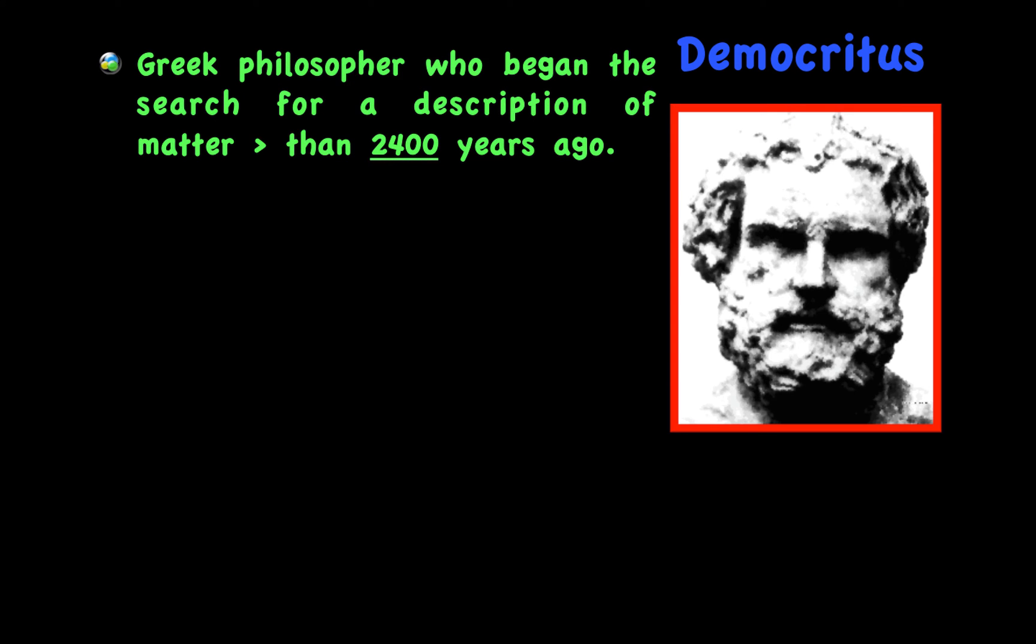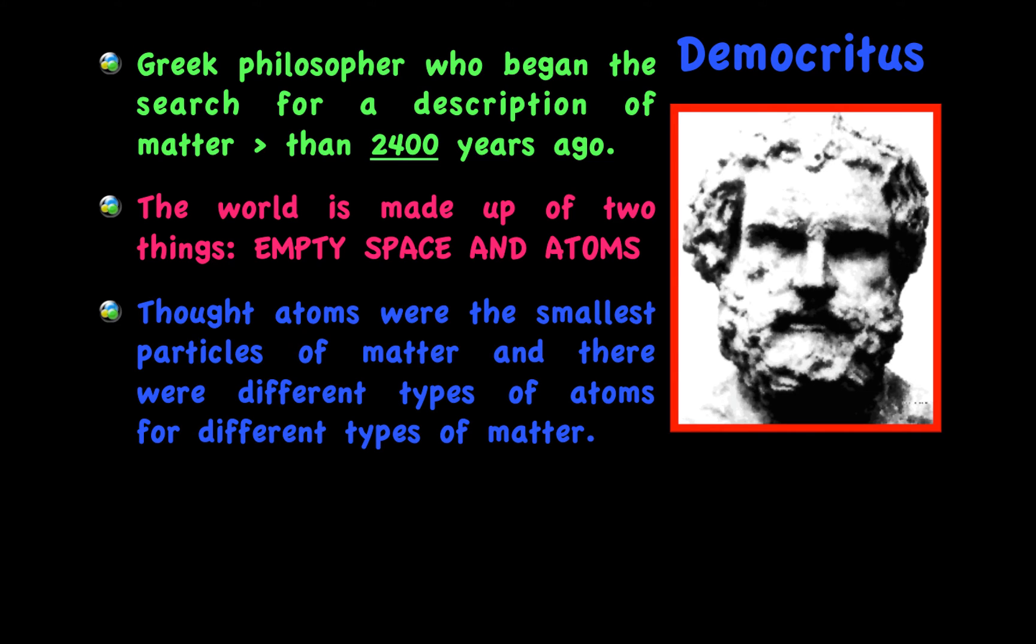Democritus was a Greek philosopher who began the search for a description of matter more than 2,400 years ago. He said that the world is made up of two things: empty space and atoms. He thought that atoms were the smallest particles of matter, and that there were different types of atoms for different types of matter. His belief was not based on any scientific evidence.